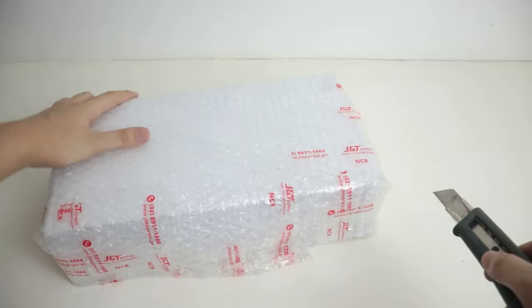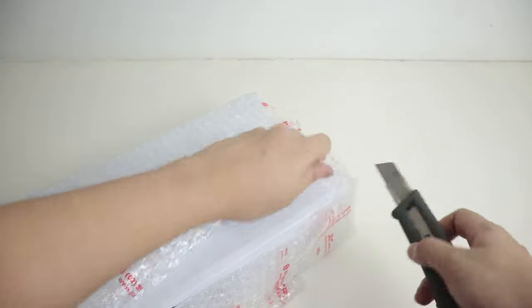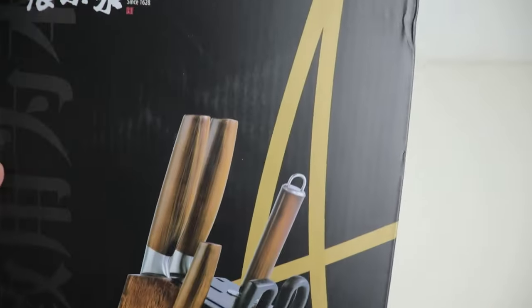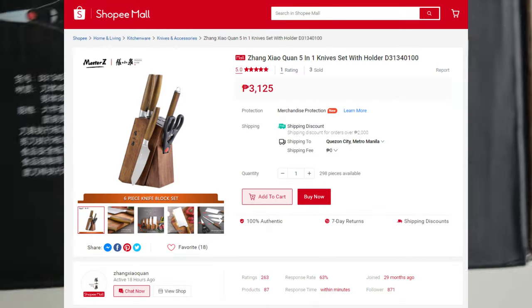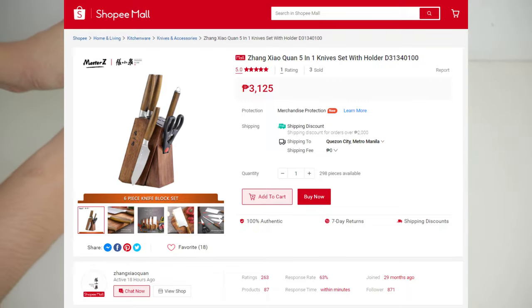Welcome to EJBits. This is the honest review of the Zhang Xiaoxian 5-in-1 knife set with holder. I believe this is the best knife set for your home kitchen and you can purchase this on Shopee Mall, which means it's legit. The price is on screen and the link is in the description below.